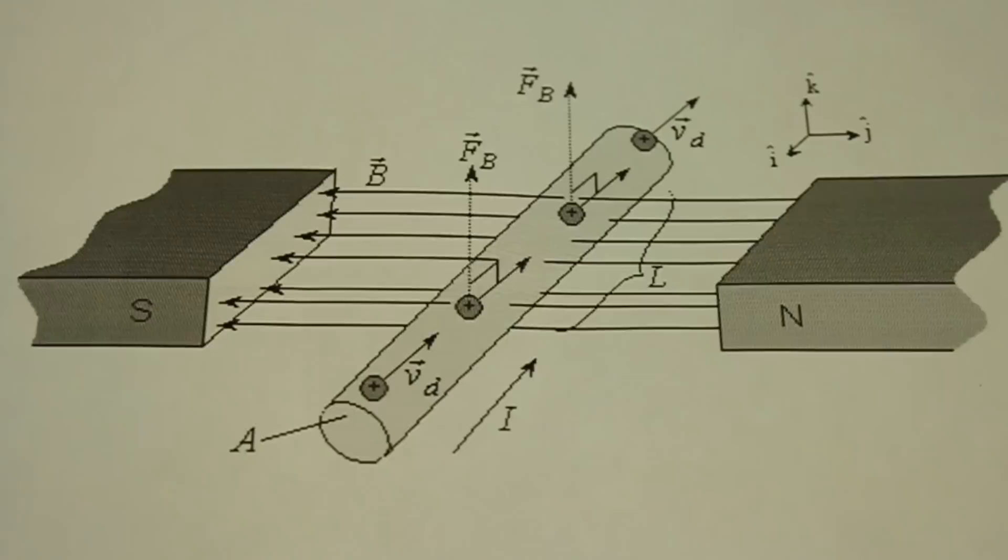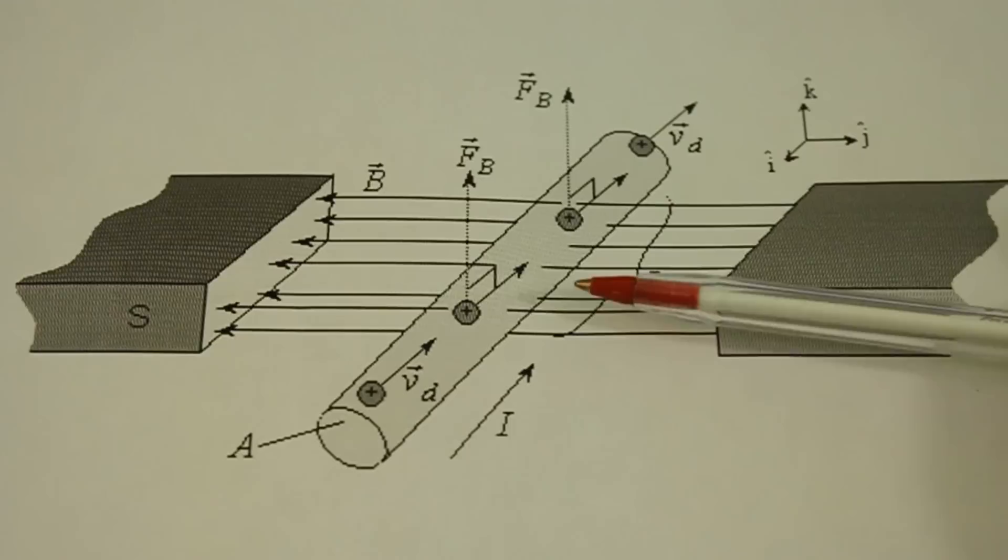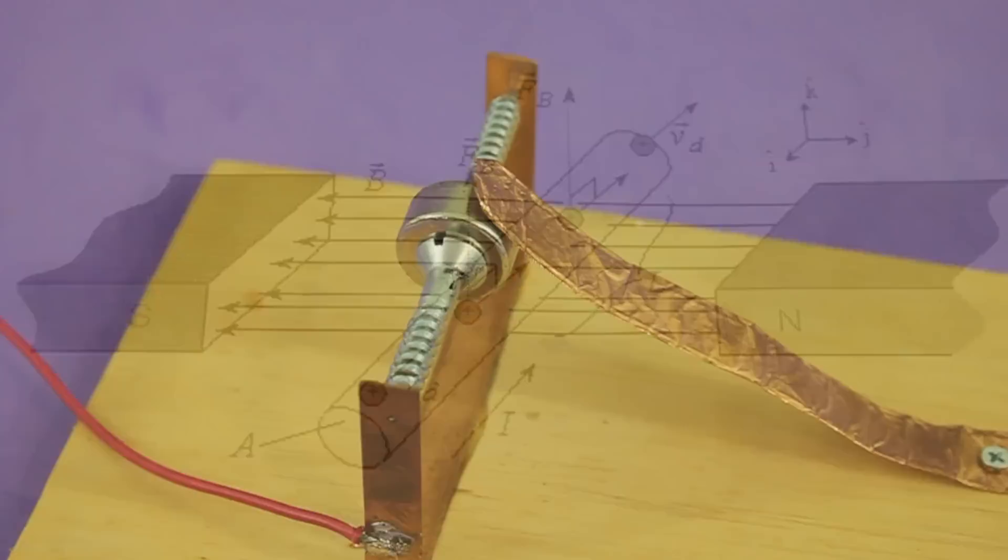When we have a conductor that has a current flowing through it and the conductor is immersed in a magnetic field, then the conductor will feel a force in a direction that is perpendicular to both the current and the magnetic field.